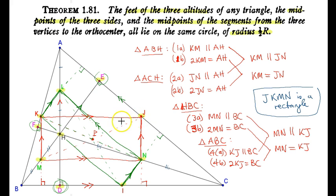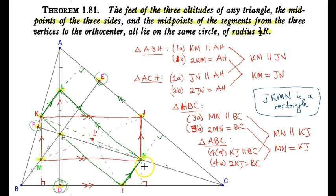In a similar way, angle MEJ subtends diameter MJ of our circle, so point E is also on our circle. And finally, point F — the foot of the altitude from C — lies on our circle because angle KFN subtends the diameter KN, and F subtends a semicircle.